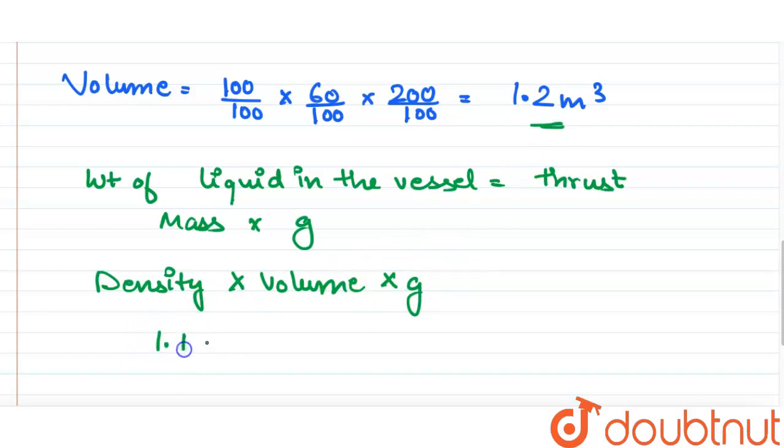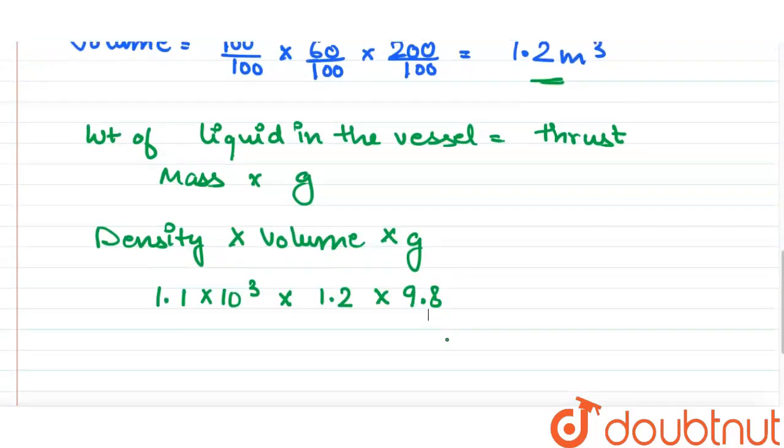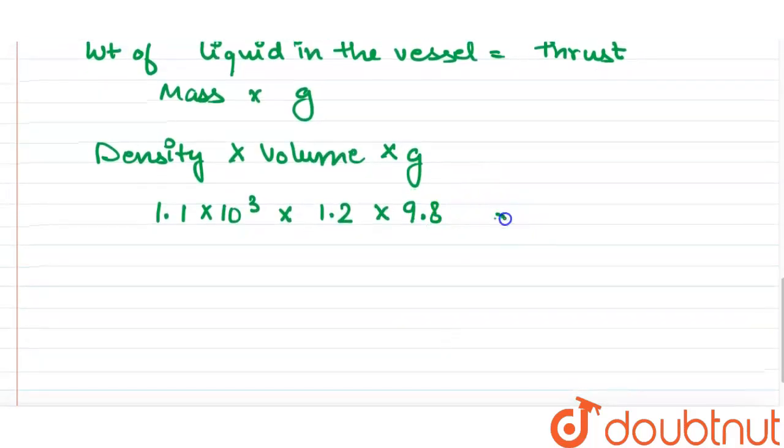So thrust will be equal to density is 1.1 × 10³ kg per meter cube, volume is 1.2 meter cube, and gravitational acceleration is 9.8 meter per second square.